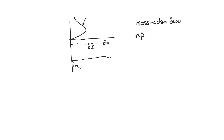Since this is a constant for all types of silicon, regardless of their doping, it is also a constant for intrinsic silicon, where N is Ni and P is Ni. So N times P, the product of electron and hole concentration, is equal to Ni squared.